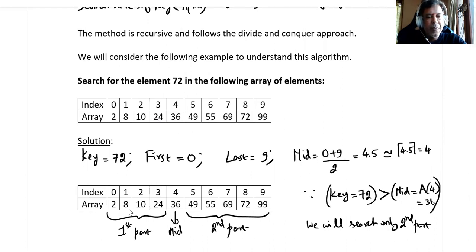This becomes your first part, this becomes your second part. Now the key 72 is larger than A(4). What is A(4)? It is the A(mid) value, which is 36, and 72 is greater than 36. We will search only the second part of the array, so we'll do the same exercise for the second part of this array.